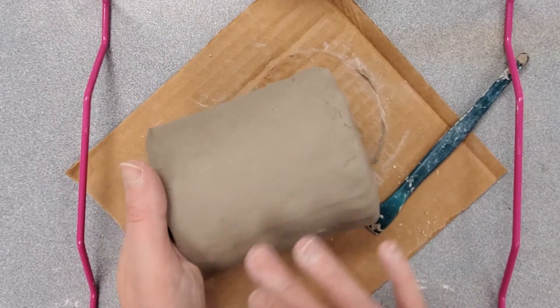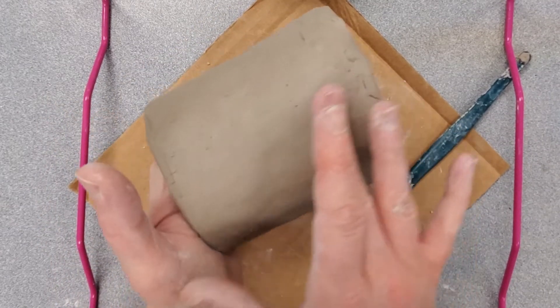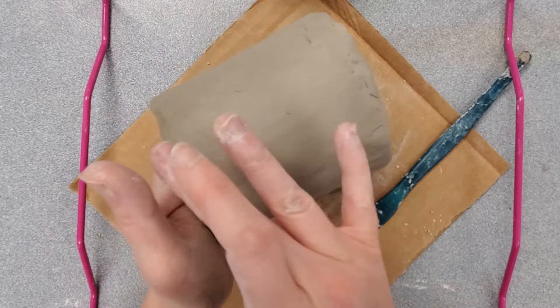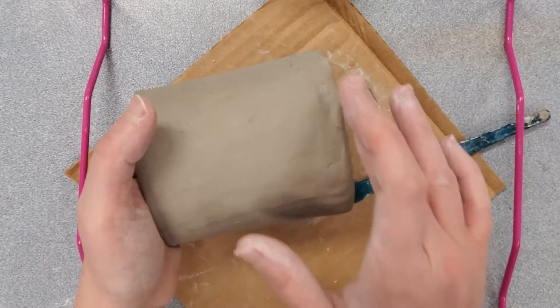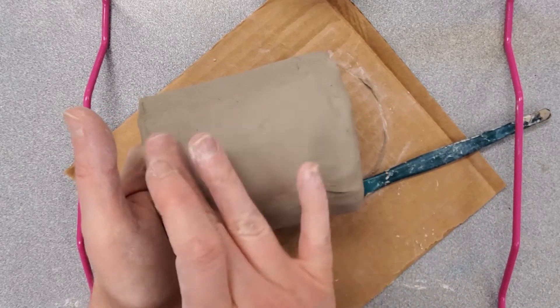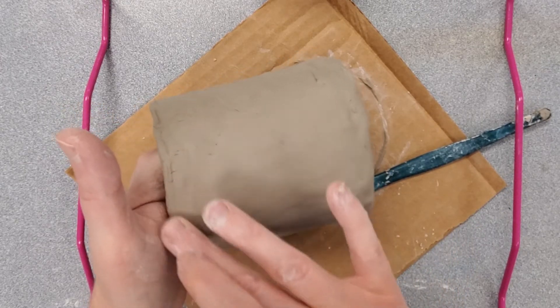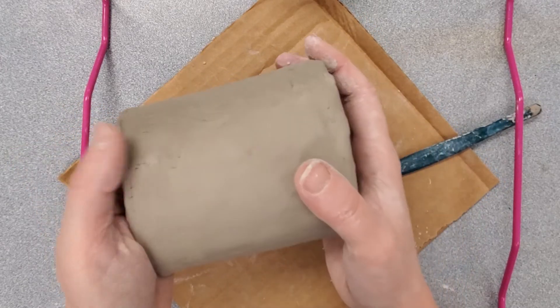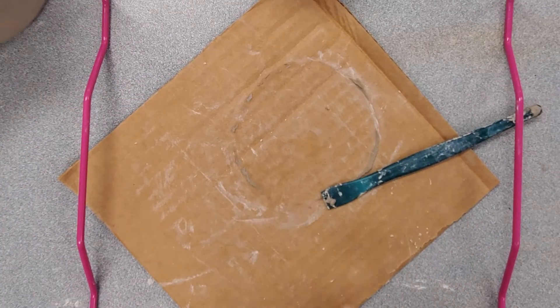Anytime you're smoothing it out on the outside, you do need to support on the inside with your other hand, otherwise you're just going to be pushing the clay inward. Do this all the way around. You can see the impact that this has on the exterior of my mug just by taking a moment to smooth out cracks. So pretend I did that all the way around. You can see what that surface looks like.